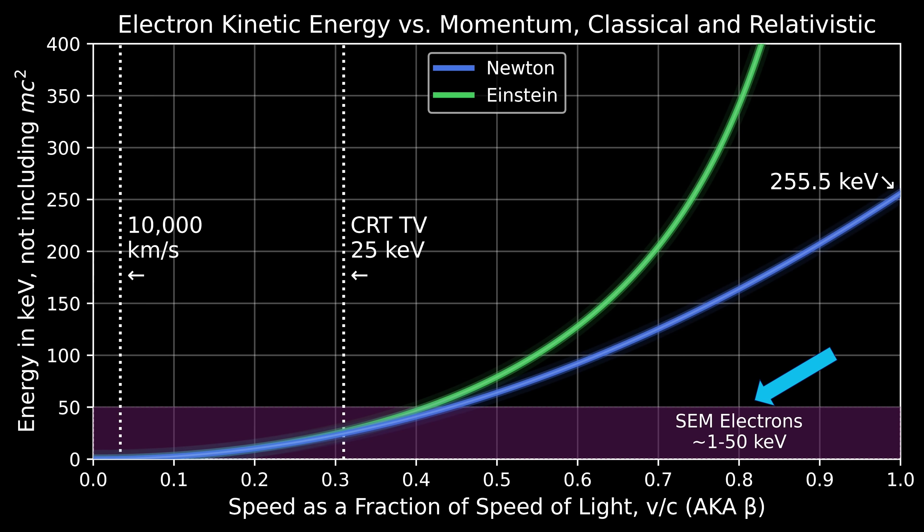Now let's go out farther on the plot, look farther to the right. What you see is that the Schrödinger equation makes a very interesting prediction: it says that if you put 255.5 keVs into an electron, you can accelerate it to the speed of light.